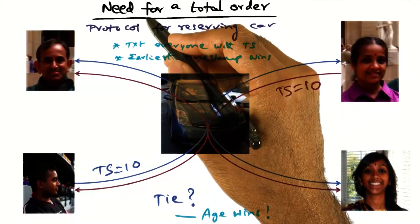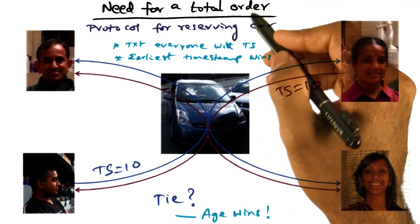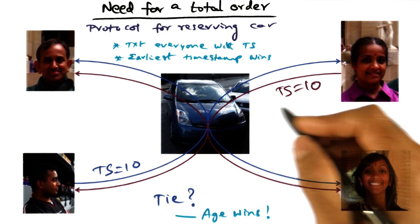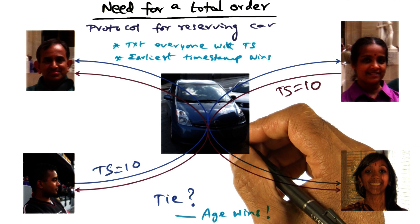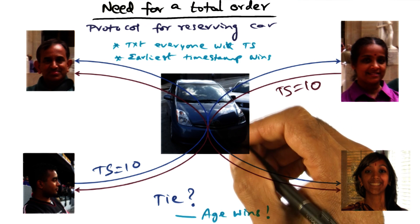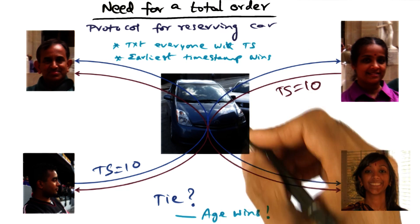Let's look at an example to illustrate the need for a total order. I'm going to use my own personal life example to illustrate the need for total order.